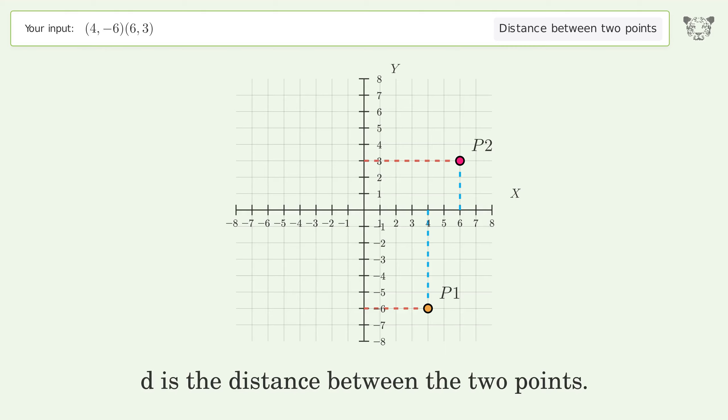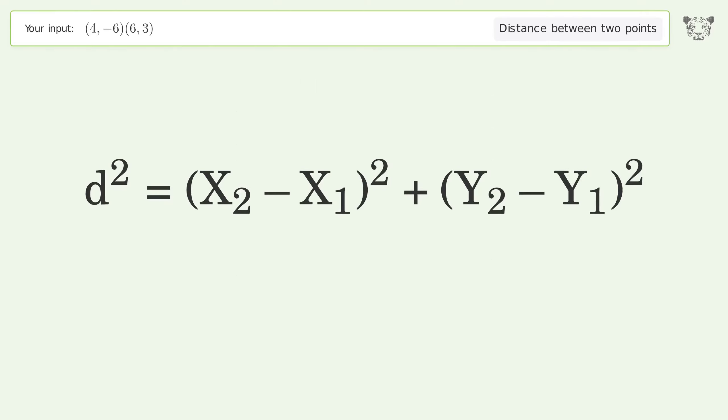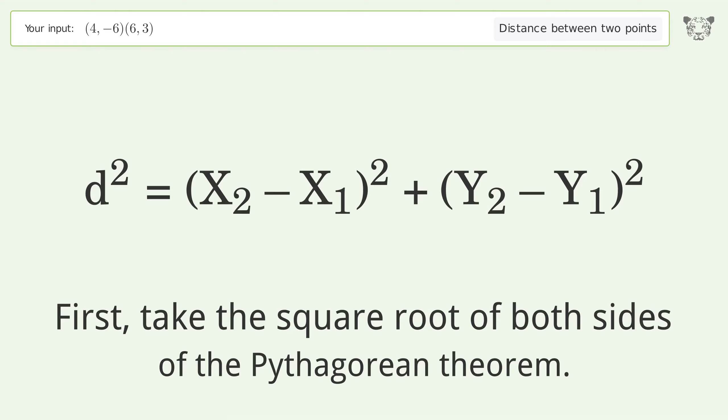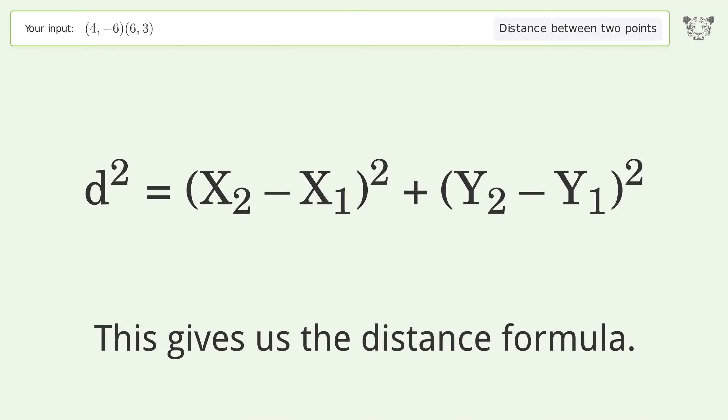d is the distance between the two points. First, take the square root of both sides of the Pythagorean theorem. This gives us the distance formula.